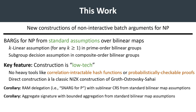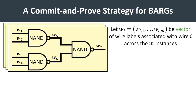As corollaries to our main construction, we also obtain a RAM delegation scheme, also known as a SNARK for P, with a sublinear-sized CRS from standard bilinear map assumptions, as well as an aggregate signature scheme that supports bounded aggregation in the plain model. Our approach follows the commit-and-prove strategy, much like the NIZKs of Groth, Ostrovsky, and Sahai.